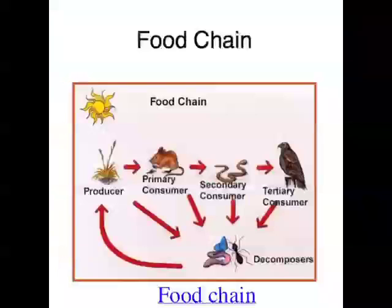Organisms interact with each other all the time, but the most important way that one organism needs another is basically as a source of food — as a source of energy. If an organism doesn't eat, doesn't get food, doesn't get energy, it's going to die. So that's really the most important way that organisms need each other, and that's what this episode is going to be about.